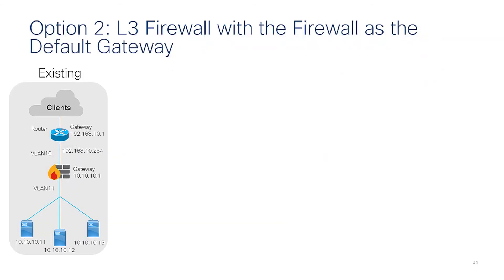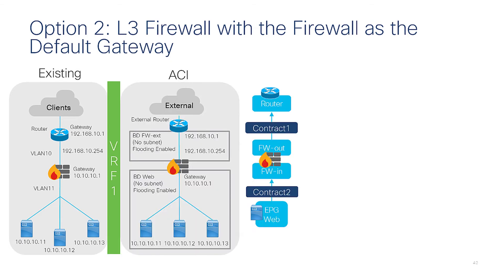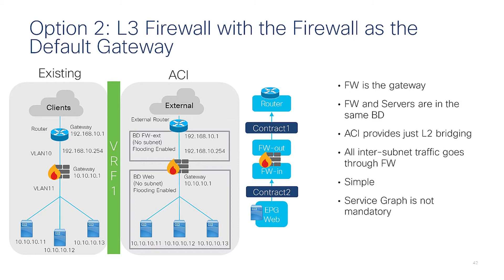Option two is a layer three firewall with the firewall as the default gateway. In ACI, you again have two BDs. One BD is doing only layer two, and in this case ACI could be used just as a layer two device providing bridging. This is a simple device deployment — no service graph necessary, just like the previous design. The contracts required are shown here.